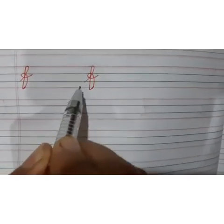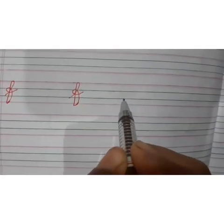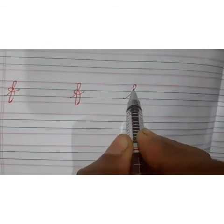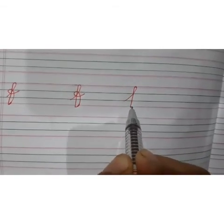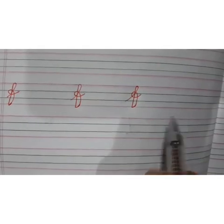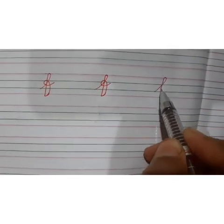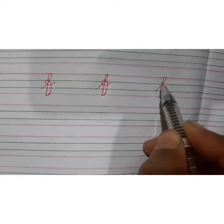I will make it little slow so that you can see the video properly. This is the small f. So you can practice this f. Two pages.